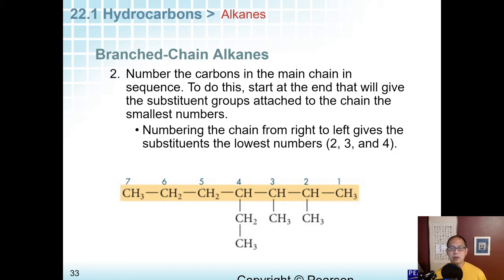The next thing we need to do is we need to number the carbons in the main chain. To do this, you're going to number it in a way that the substituent groups have the smallest numbers. It's actually from right to left for this particular picture because if you go one, two, three, four, five, six, seven, then you have substituents on two, three, and four. Now, imagine if we numbered it the other way, one, two, three, four, five, six, seven, going from left to right, then our substituents would be on four, five, and six. So you see the difference. One right to left gives us the lowest substituent numbers.